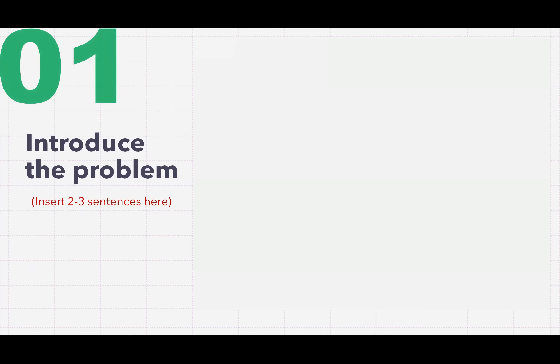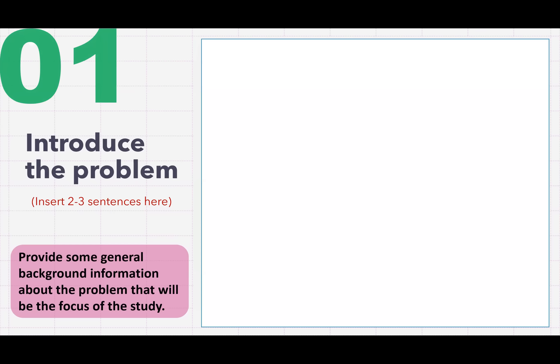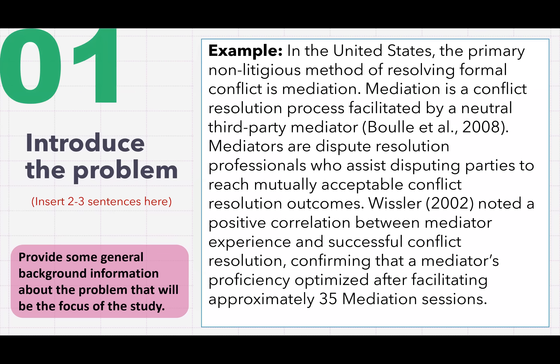Number one: introduce the problem. You need to insert two or three sentences here in this box. Remember to provide some general background information about the problem that will be the focus of the study. For example: in the United States, the primary non-litigious method of resolving formal conflict is mediation. Mediation is a conflict resolution process facilitated by a neutral third-party mediator. Mediators are dispute resolution professionals who assist disputing parties to reach mutually acceptable conflict resolution outcomes. Wiesler noted a positive correlation between mediator experience and successful conflict resolution, confirming that a mediator's proficiency is optimized after facilitating approximately 35 mediation sessions. This is one example of how to introduce the problem.